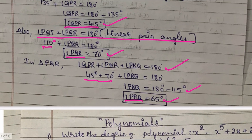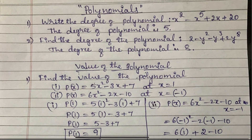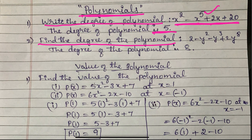Now moving to the next chapter: polynomials. In this chapter, they will ask you to write the degree of the polynomial. The highest power of the variable is called the degree of the polynomial. For example, x to the power 5 plus 2x plus 20 has degree 5. And 2 minus y squared minus y cubed plus 2y to the power 8 has degree 8.